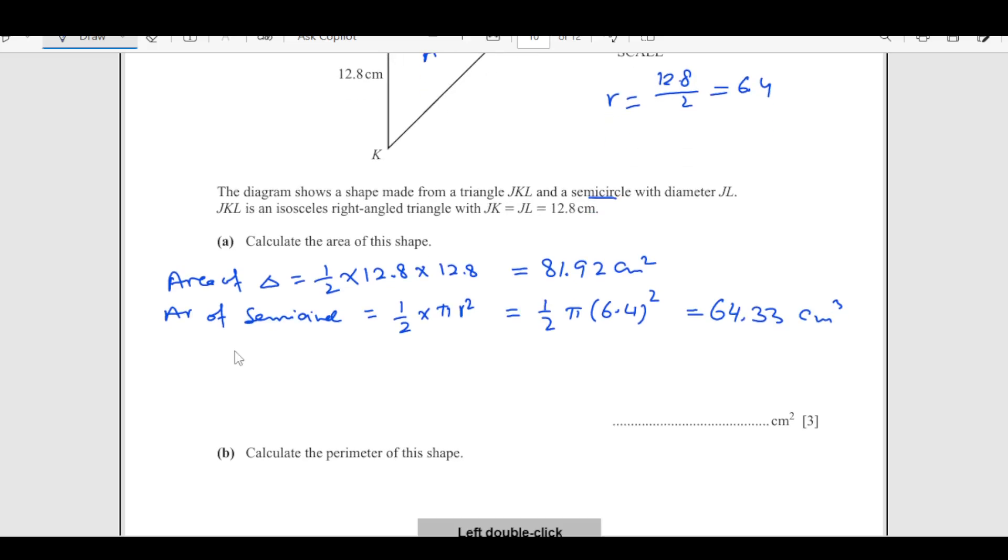Now just the total area of the shape. Area of the shape is going to be 81.92 plus 64.33. So this is 146.25. If you write in three significant figures, it will be 146.